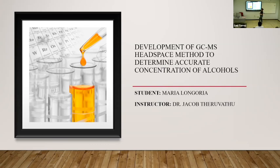The title of our research is the development of GCMS — which is gas chromatography and mass spectrometry — headspace method to determine accurate concentrations of alcohols. We started this research because since COVID started, the government allowed a lot of hand sanitizers containing ethanol to be sold and used by people. This is a concern because the ethanol inside those hand sanitizers can actually be dangerous, and we wanted to test which brands contain which concentrations of ethanol and other chemicals that can harm us.